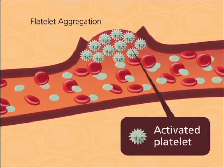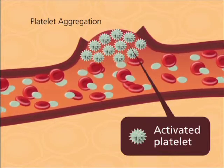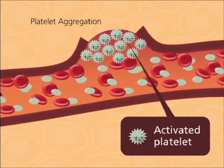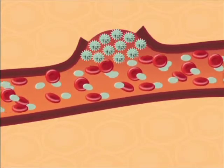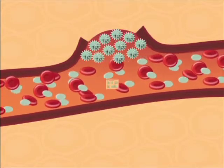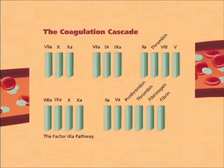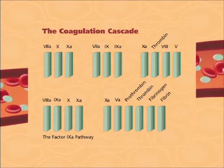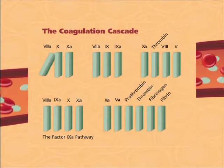This unstable primary plug of loosely aggregated platelets must then be consolidated into a more stable plug. This is achieved through the generation of thrombin at the wound site. Free tissue factor released from subendothelial stores and platelets initiates the coagulation cascade with its interaction with activated factor VII. The complex of tissue factor and factor VIIa converts factor X to its active form, factor Xa.